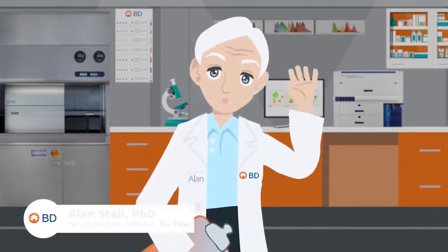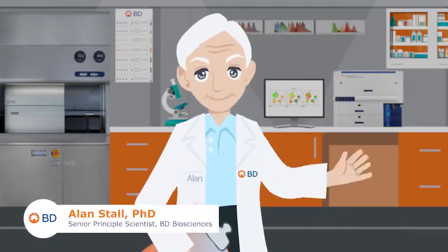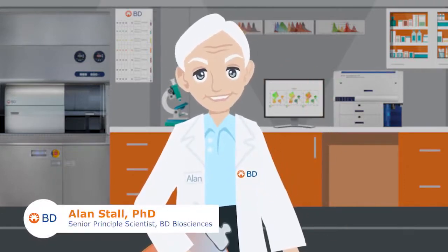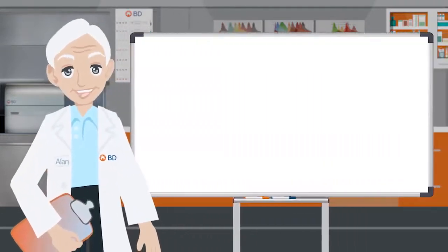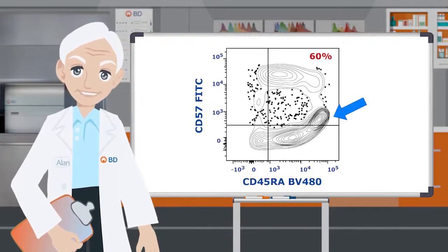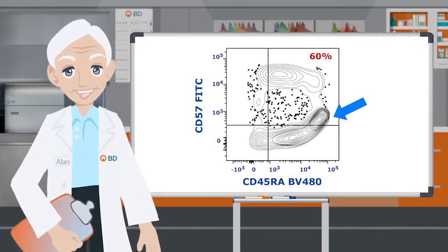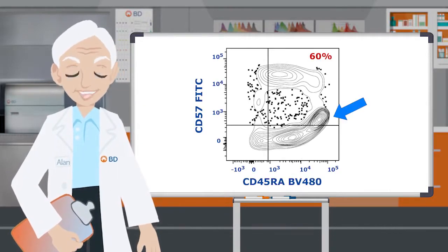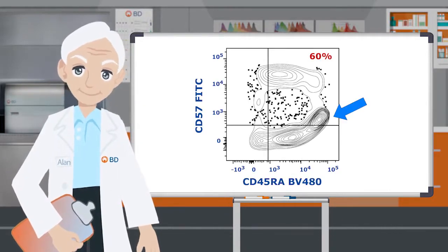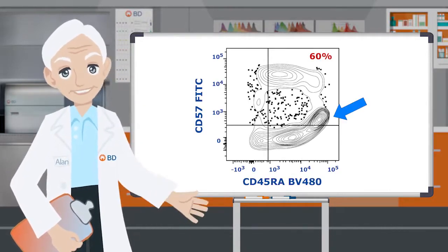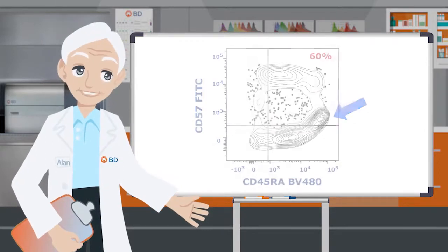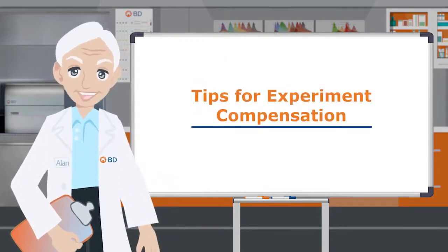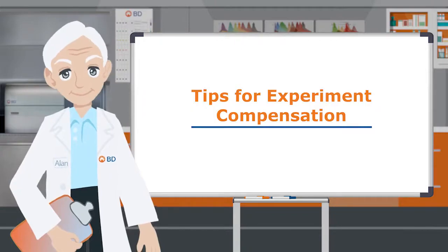Hi, I'm Alan Stahl, a Senior Principal Scientist here at BD Biosciences. Have you noticed that sometimes the compensation of your panel seems to be off? This is probably due to the controls that you used. Here are some tips to help you get the best compensation for your experiments.